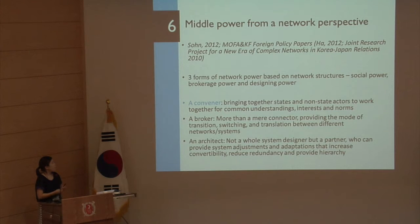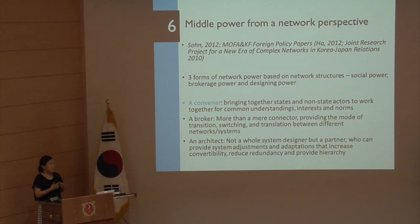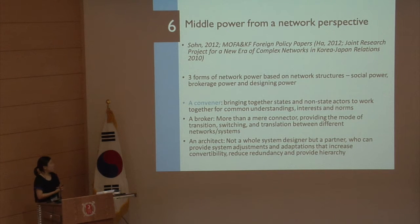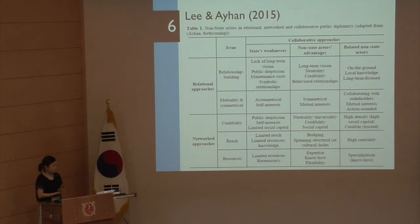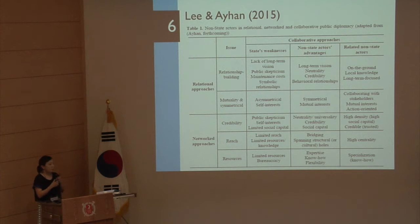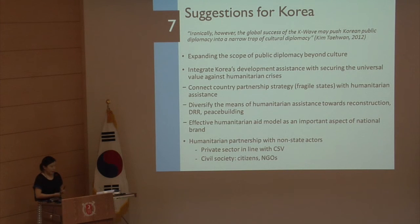This is the framework I present in the paper: viewing middle power from a network perspective, using three forms of network power — social power, brokerage power, and designing power. Integrating middle power strategy into public diplomacy strategy is most closely aligned with being a 'convener,' which brings together states and non-state actors to work for common understandings and interests — in the case of humanitarian assistance, to collectively challenge those crises. Non-state actors also have a distinct advantage in terms of being collaborative and setting up networks.